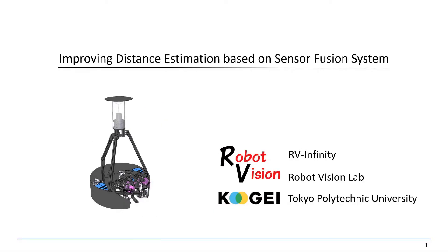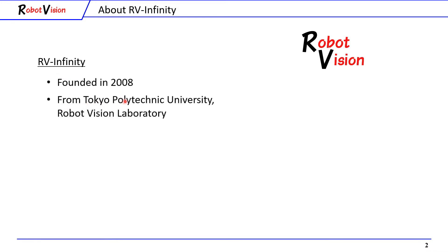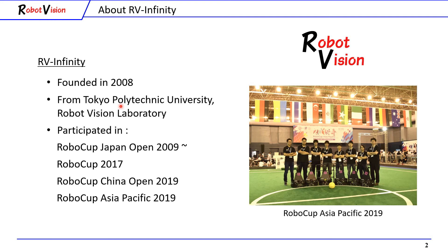Hi everyone. I'm Kevin Ricardo from RV Infinity. Today I will be presenting about improving distance estimation based on sensor fusion system. First of all, I will introduce a little bit about our team. Our team, named RV Infinity, was founded in 2008. We are from Tokyo Polytechnic University Robot Vision Laboratory. Our laboratory focuses on developing and doing research in vision systems. Since then, we have participated in RoboCup competition focusing on the middle-sized league. Here is a picture of our team in RCAP 2019.